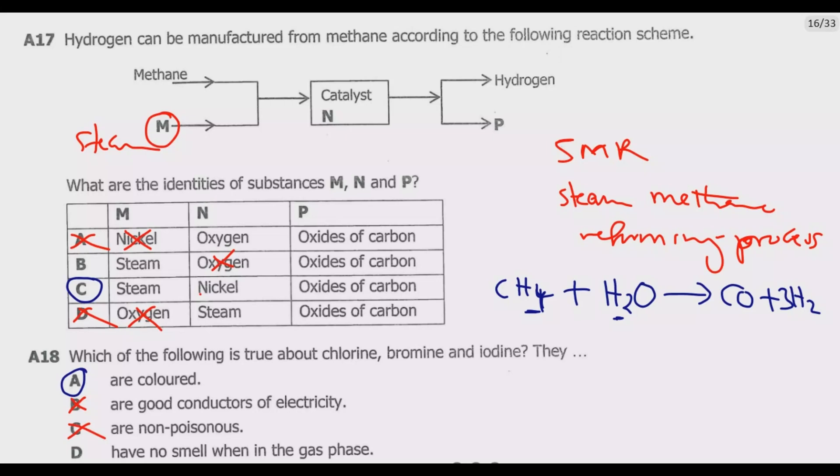The halogens are poisonous substances under given conditions. D, they have no smell when in the gas phase. This is incorrect. They all have distinctive smells. This is how you answer question 18.